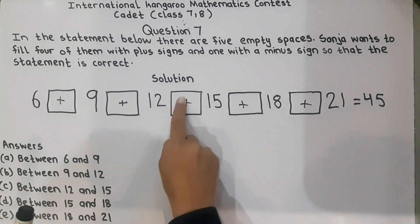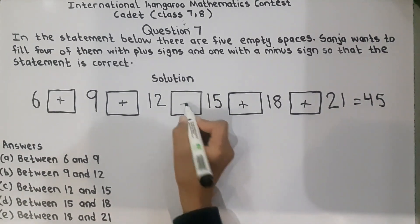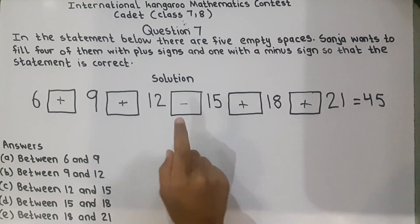So 6 plus 9 equals 15, 15 plus 12 equals 27, 27 minus 15 equals 12, 12 plus 18 equals 30, and 30 plus 21 equals 51. Now this statement is not working either.